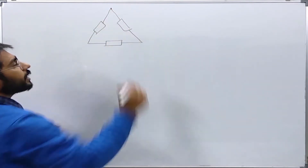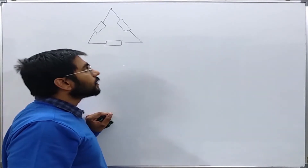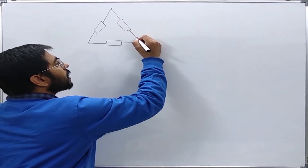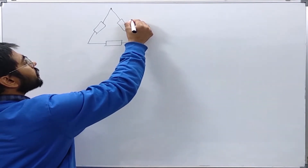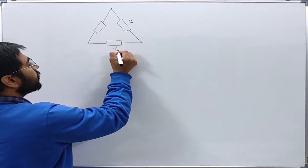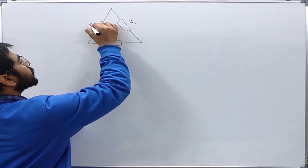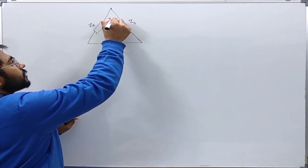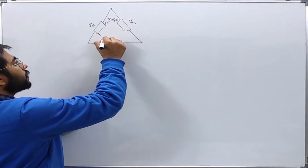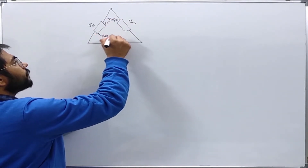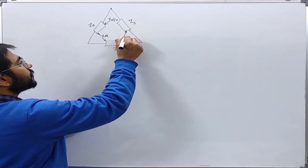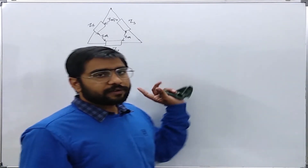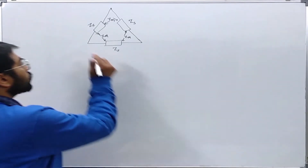We already know from our previous lectures that if it is a balanced load, then the sequence networks will be decoupled. The self impedances are Zs, Zs, and Zs, and these are also having mutual coupling creating Zm, Zm, Zm between the branches. Now we want to find the sequence network for this kind of load or system.